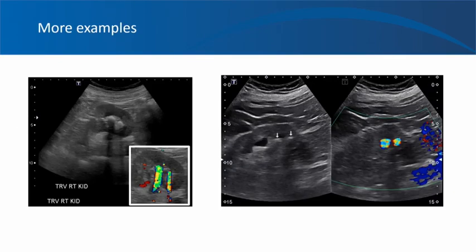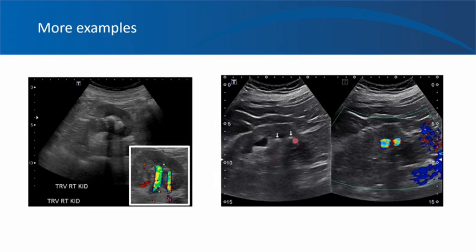Here are some more examples. This is a transverse section of the right kidney showing two hyperechoic structures with shadowing, and when you turn on the color mode, you see nice twinkling with tails. Here is another example of a kidney ultrasound showing two stones in the lower pole of the kidney, appearing as echogenic or hyperechoic structures with some shadowing. When you turn on the color Doppler, you see nice twinkling for both. Note that this one doesn't have tails, but the twinkling is very obvious.